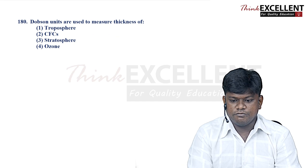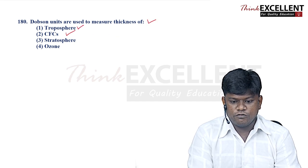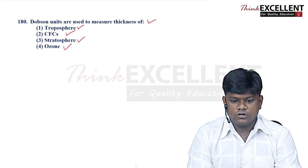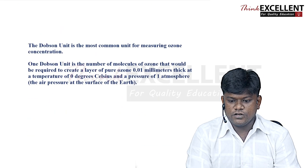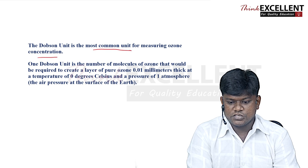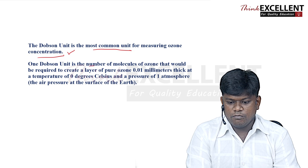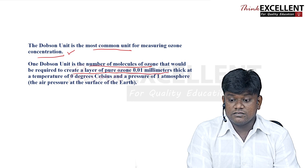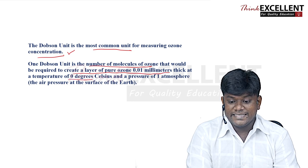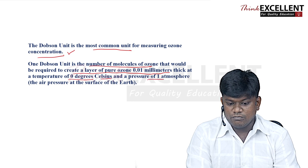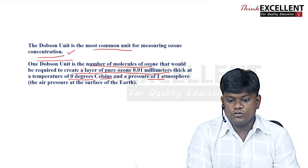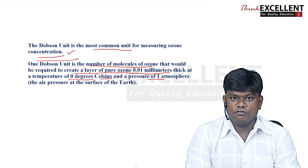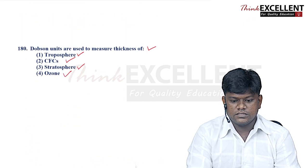Question 180: Dobson units are used to measure the thickness of which layer? Options are troposphere, chlorofluorocarbons, stratosphere, and ozone. Dobson units are the most common unit for measuring ozone concentration — defined as the number of molecules of ozone required to create a layer of pure ozone 0.01 mm thick at 0°C and 1 atmosphere pressure. Option 4 — ozone — is the right answer.